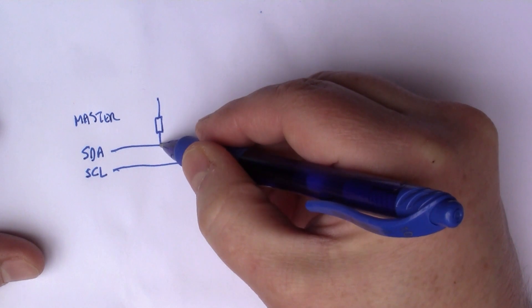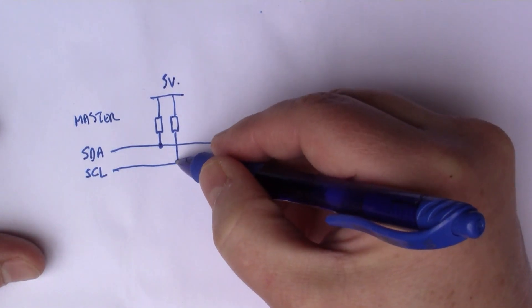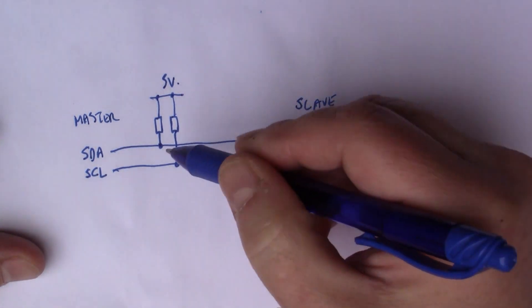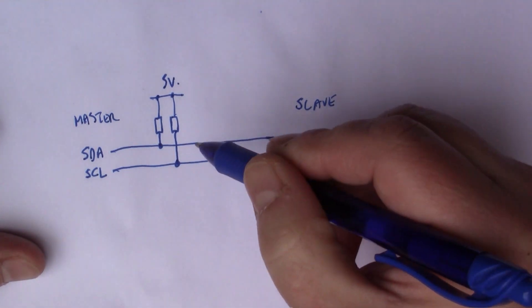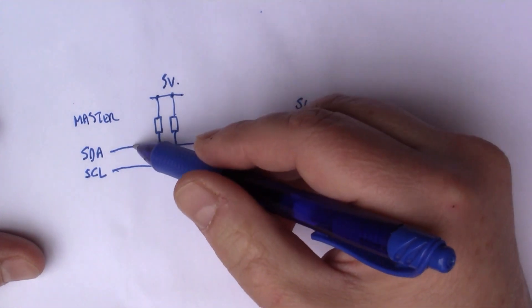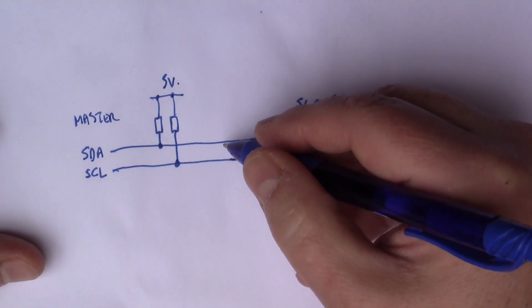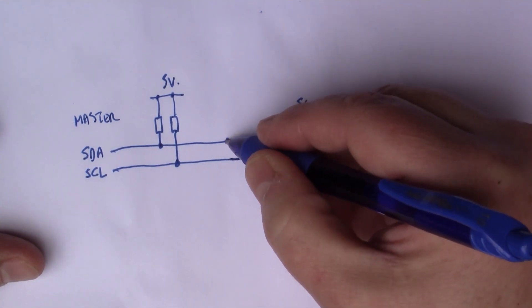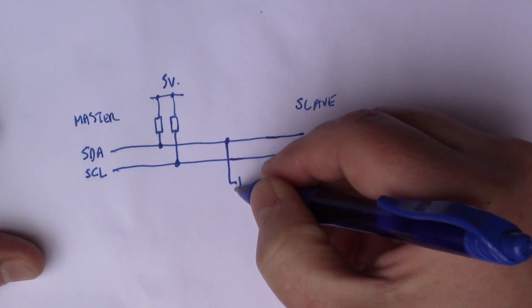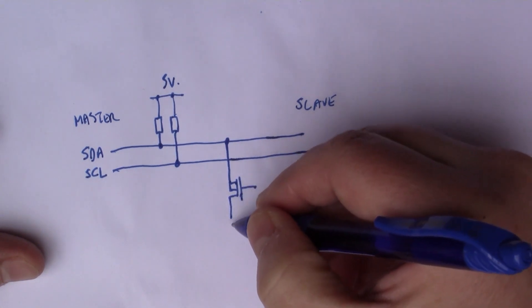In order for multiple devices to hang off the same bus, you need pull-up resistors. The master has a couple of resistors connected to the five volt rail. If nobody is actively switching the bus, by virtue of this resistor, the line will be floating at five volts.